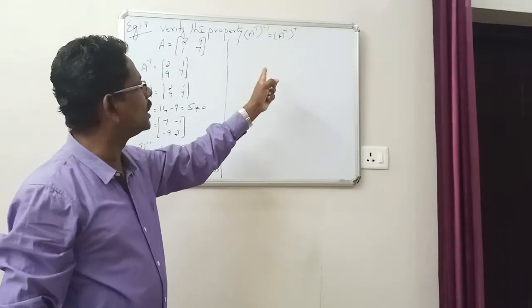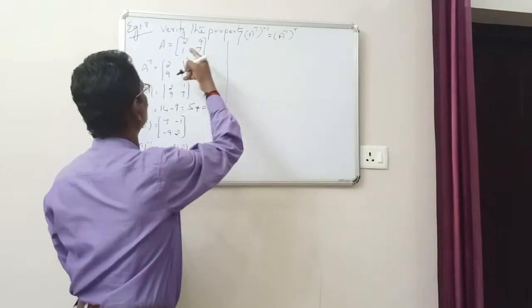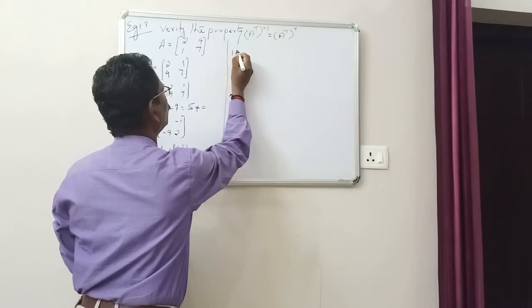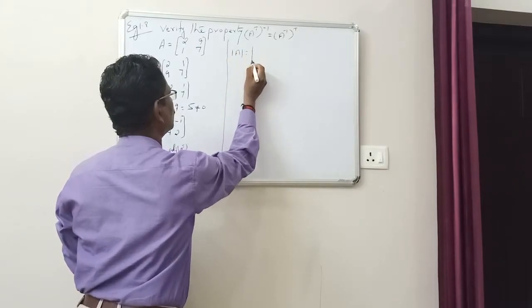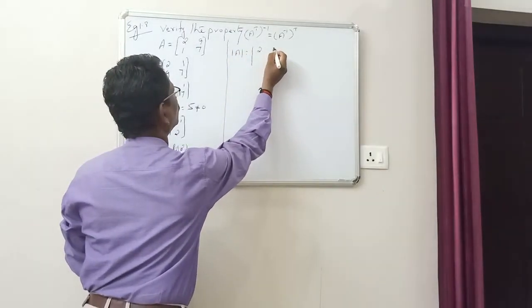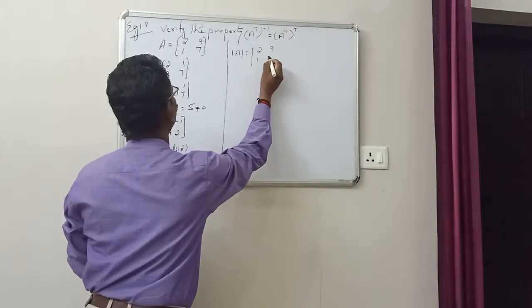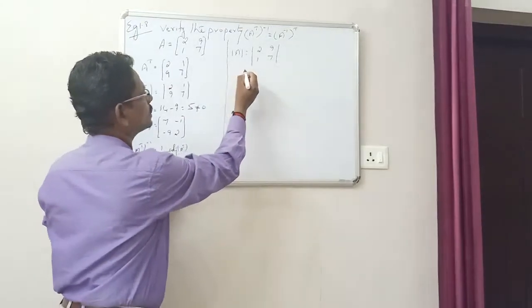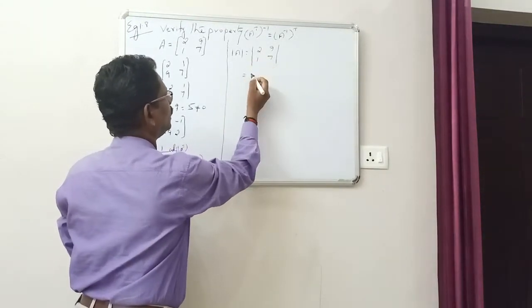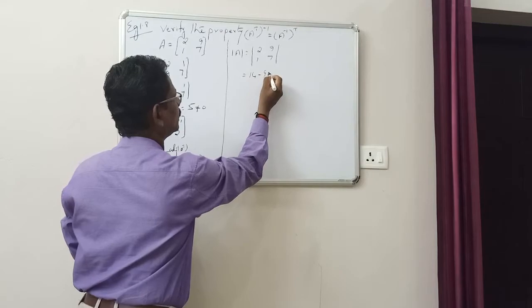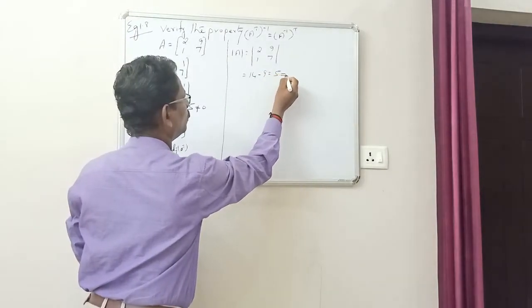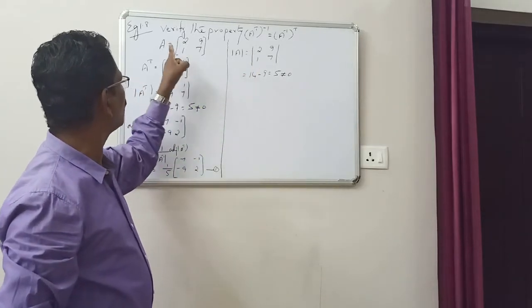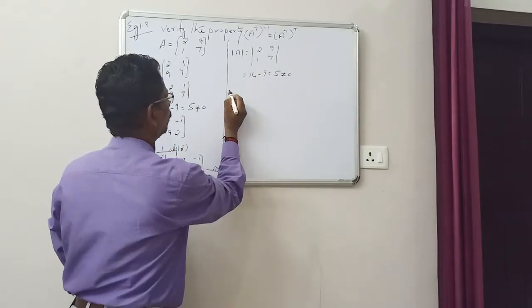Now RHS: A inverse the whole transpose. First find A inverse. Determinant of A equals determinant of [[2, 9], [1, 7]], which equals 14 minus 9, equal to 5. Since it is not equal to 0, the inverse exists.